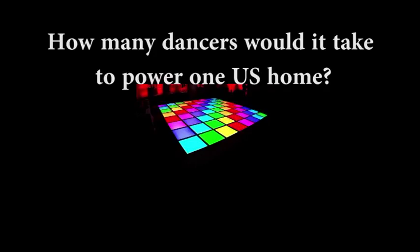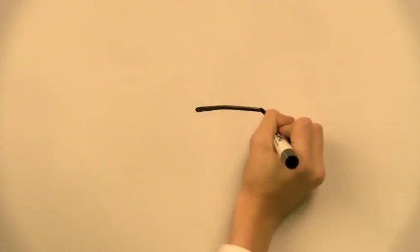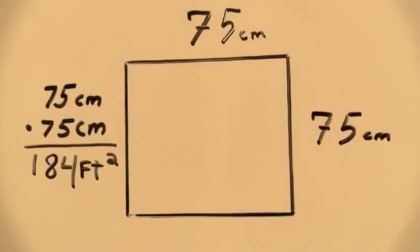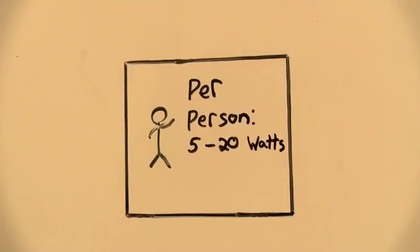How many dancers would it take to power one US house for a month? An energy-generating dance floor flexes and bends to turn a multitude of small generators located underneath it. One floor provides about this many watts of sustained output, this being split about this much per person.